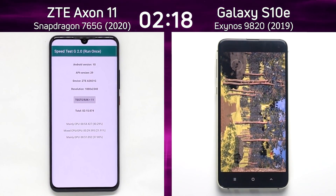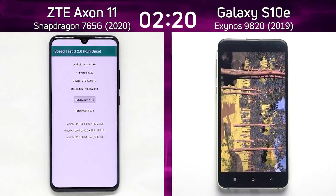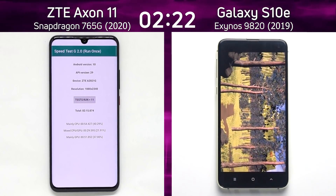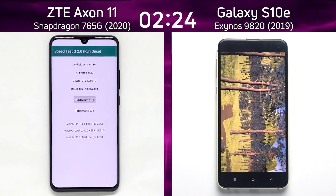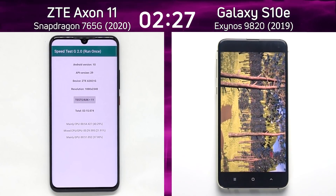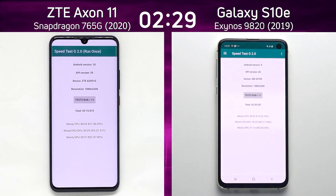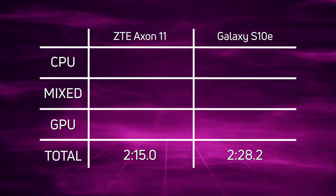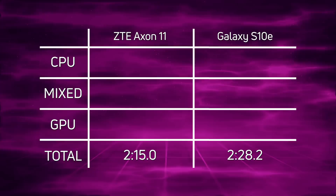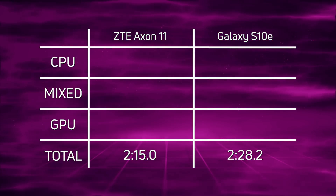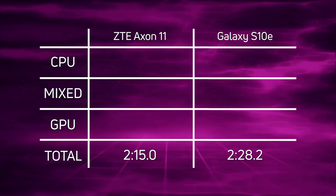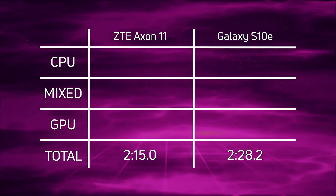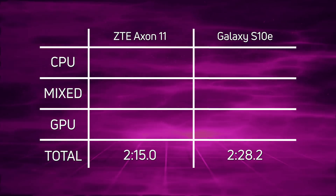There we go — 2 minutes 15.0 seconds for the Snapdragon 765G in the ZTE Axon 11. On the right hand side we're waiting for the Galaxy S10e to get through the rest of that forest scene. And there we go: 2 minutes 28.2 seconds. So a win by the ZTE Axon 11 with the Snapdragon 765G by 13.2 seconds overall, but it's not a simple story.